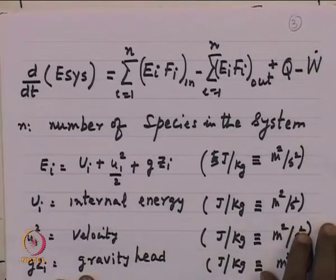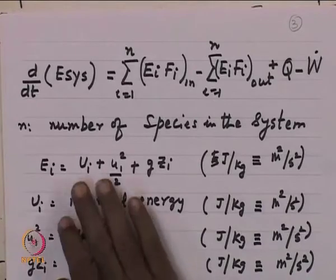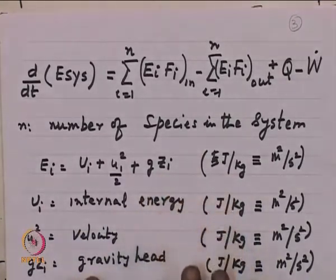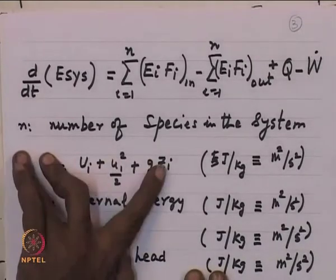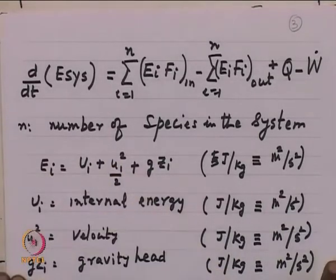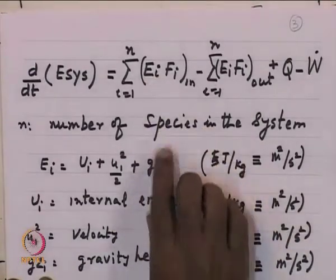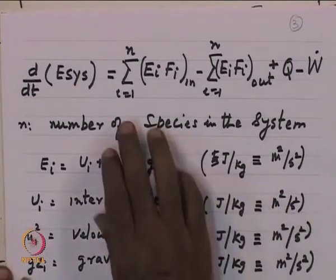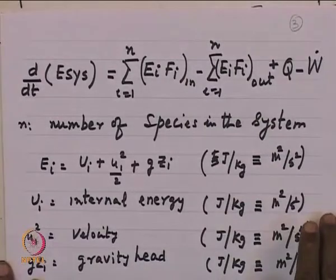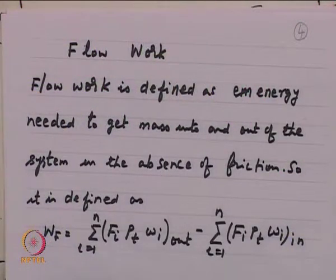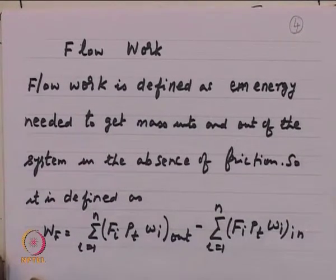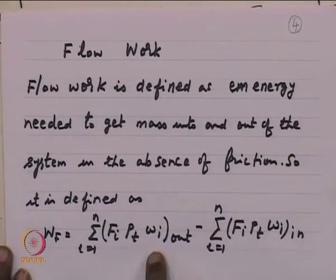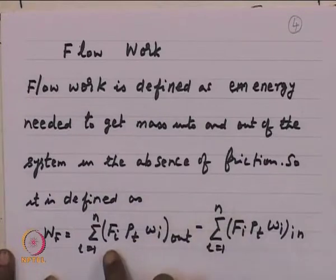So, accumulation equals input of energy minus output of energy — there is no generation of energy — plus heat input through heat transfer and minus W_dot for work output, such as from a shaft turning a motor. E_i is the energy associated with component i, which consists of three components: internal energy, kinetic energy, and potential energy.